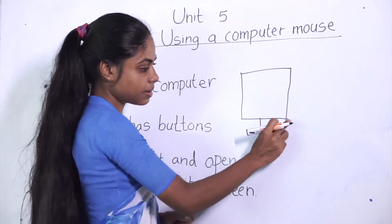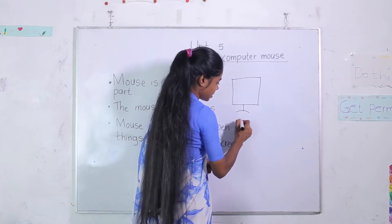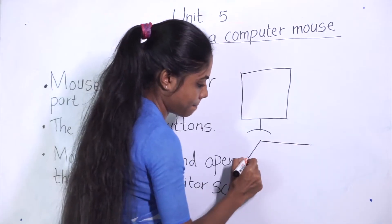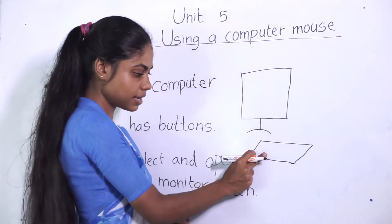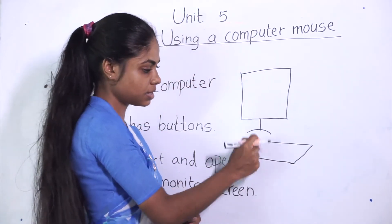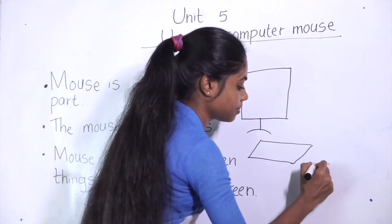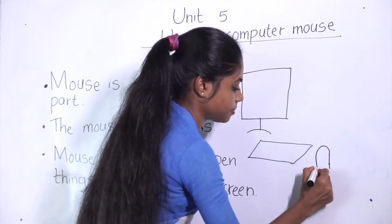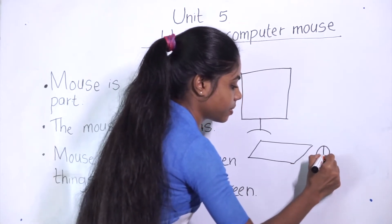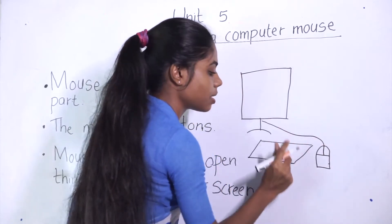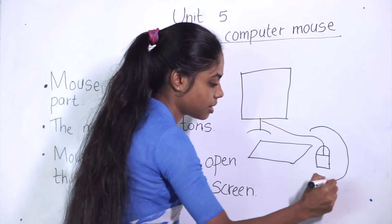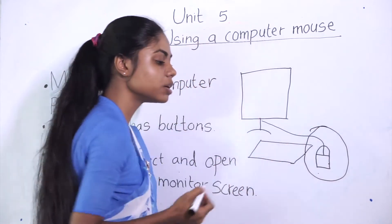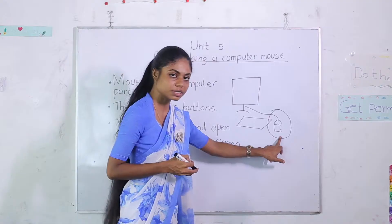It is the monitor and what's this? This is the keyboard. And what's this small part? This is the one we are going to talk today. This is the mouse.